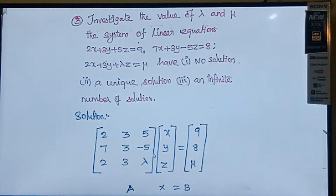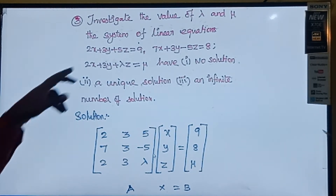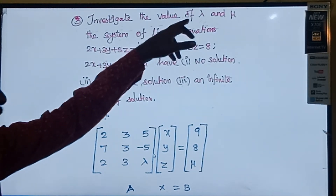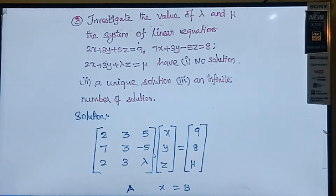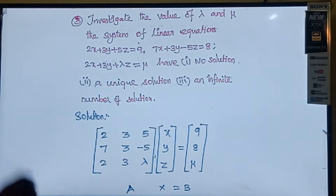This problem is the same as the previous problem. The only difference here is that two unknown values are present: lambda and mu. The previous problem had only one unknown value — that is the only difference from the previous problem.